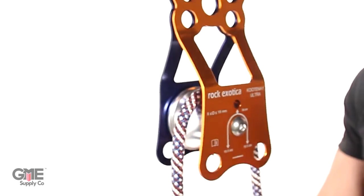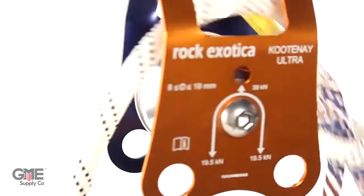With a sheave diameter of 2.2 inches, the Kootenay makes it easy to pass knots.